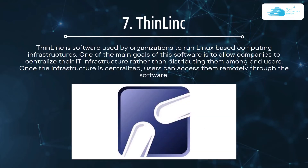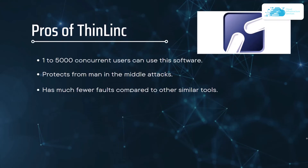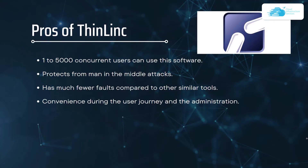At number seven we have ThinLinc, a software used by organizations to run Linux-based computing infrastructures. Its main goal is to allow companies to centralize their IT infrastructure rather than distributing it among end users. Its pros include support for 1 to 5,000 concurrent users, protection from man-in-the-middle attacks, and better convenience during the user journey, with administration that is very straightforward.